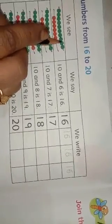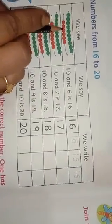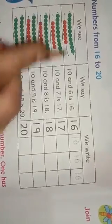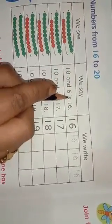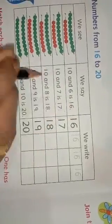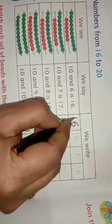1, 2, 3, 4, 5, 6, 7, 8, 9, 10. And how many red color beads? 1, 2, 3, 4, 5, 6. Means we say 10 and 6 is 16. 1, 6, 16. This is number 16.